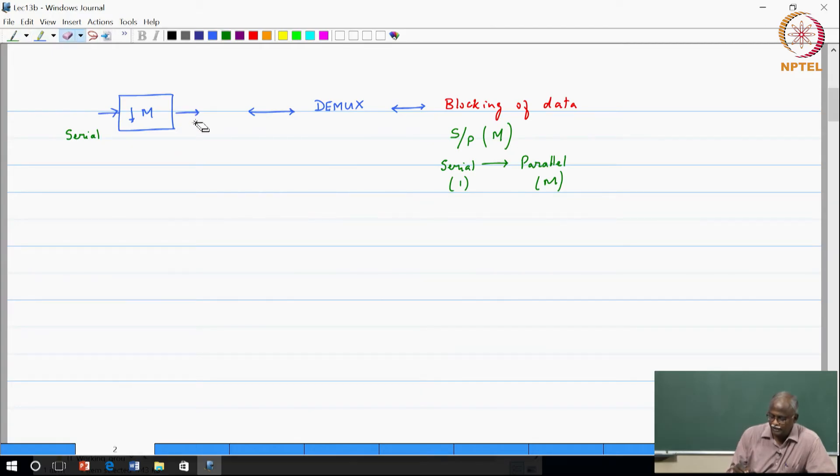So again this representation: the down sampler has got not only the down sampling operation, it is also very closely tied to the demultiplexing operation and also the blocking of data. So those are linked concepts.